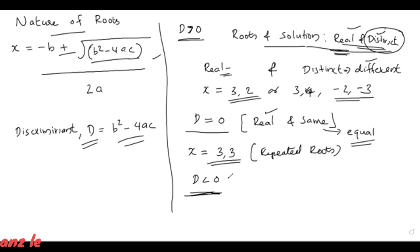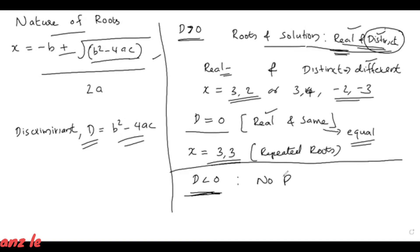When D is less than zero, that is b squared minus 4ac is negative, there are no real solutions.